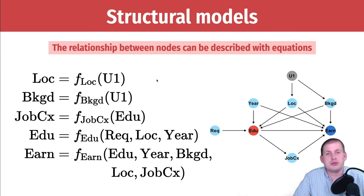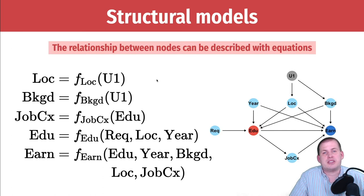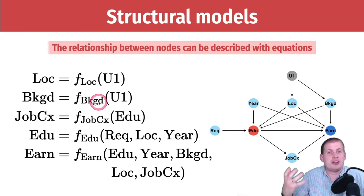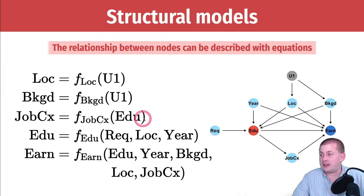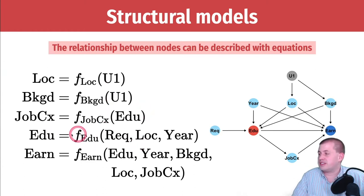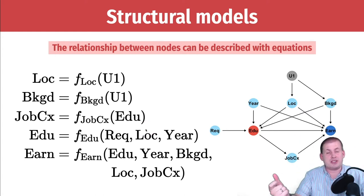It's just some location function that we don't know fully. If you think about regression from session two, we were trying to predict happiness based on the number of cookies eaten — you plug in the number of cookies into some function and it spits out happiness. This is a similar thing. We take some unobserved stuff, stick it into some function, and it spits out our location. Same with background — there's some function that generates your background. Education is caused by required schooling, location, and the year you're born, and if you shove all three into a hypothetical function, it spits out predicted years of education.